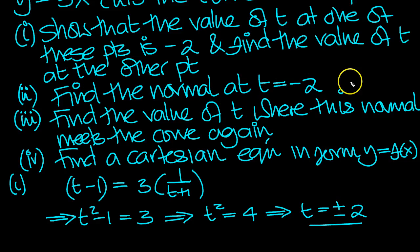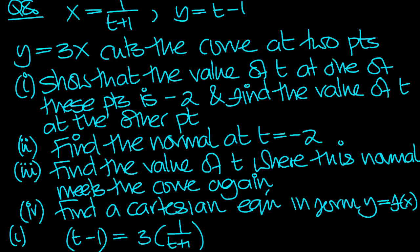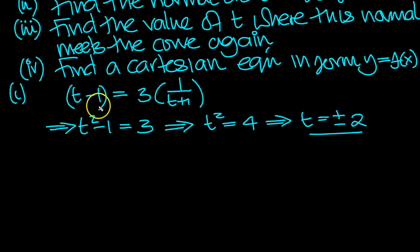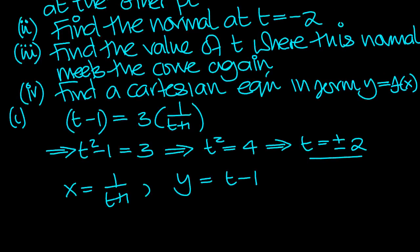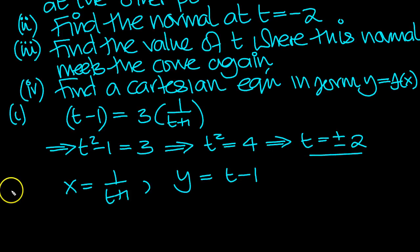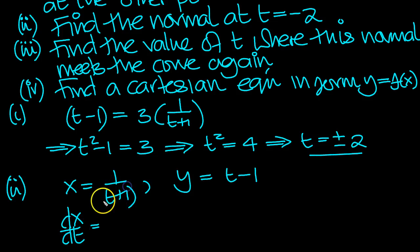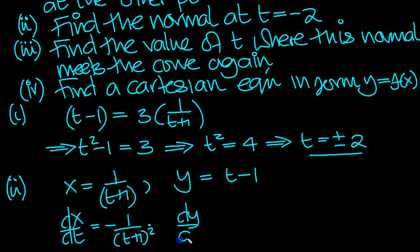Now find the normal at t equals minus 2. We have x equal to 1 over t plus 1 and y equal to t minus 1. We need the gradient. dx/dt: differentiating 1 over t plus 1 gives minus 1 over t plus 1 squared, multiplied by 1. dy/dt: differentiating t minus 1 gives 1.